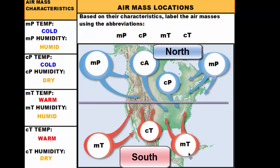That's how you go about labeling your air masses — you just have to look at where they form. If they're in the north, they're polar. If they're on the water, they're maritime. If they're over land, they're continental. If they're down south, they're tropical, and the same thing goes — maritime for over the ocean and continental over the land. That concludes our air mass video. I hope you find this helpful.